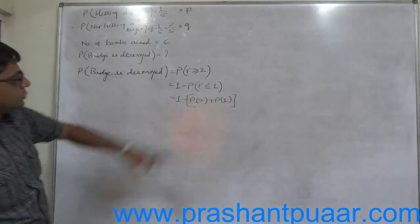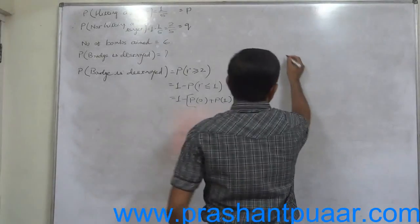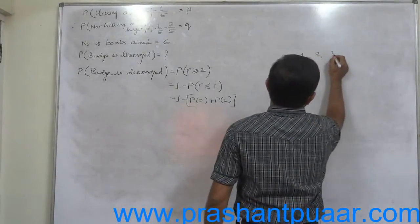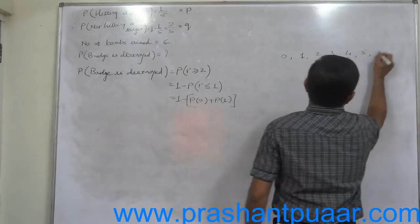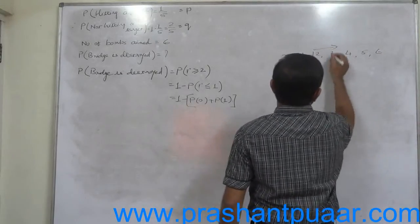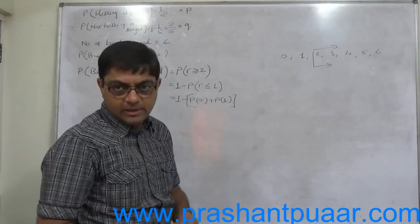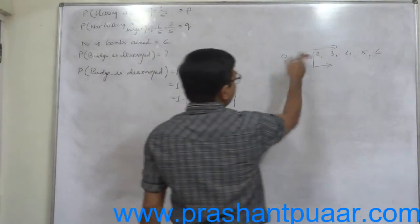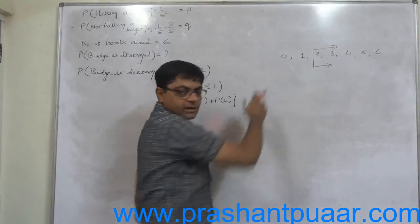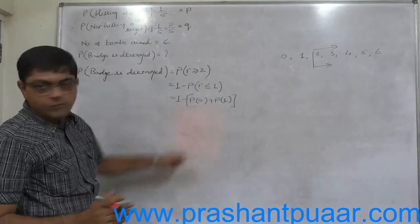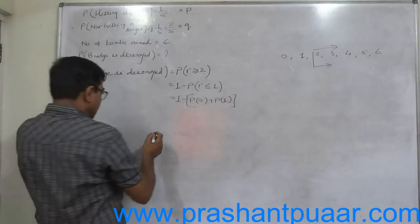To get the probability of at least two, we have two ways. Either we can calculate probability of 2 or more, that is 2 or 3 or 4 or 5 or 6. We have to find five probabilities and then summation becomes the final answer. Or we can find the probability of complement event, and 1 minus probability of complement event also gives us the answer.